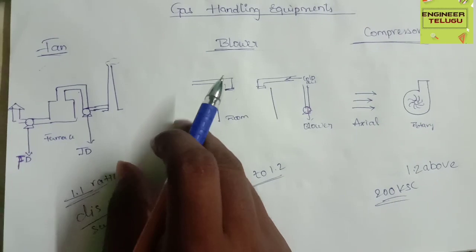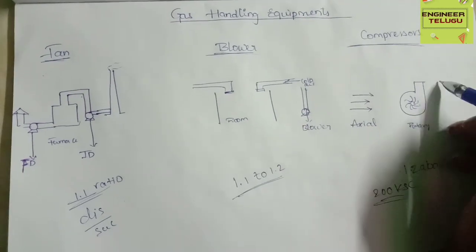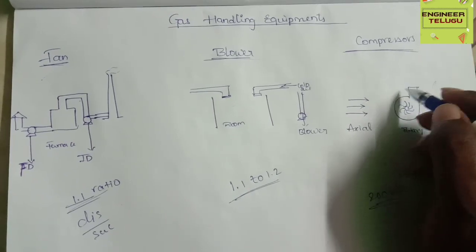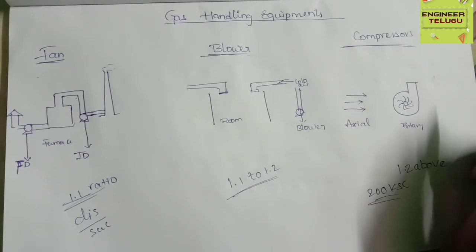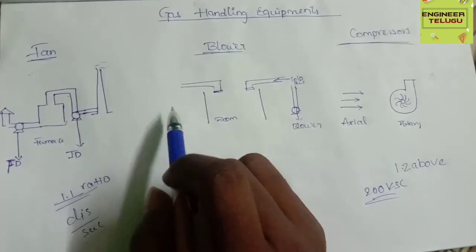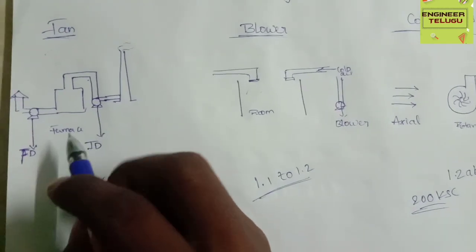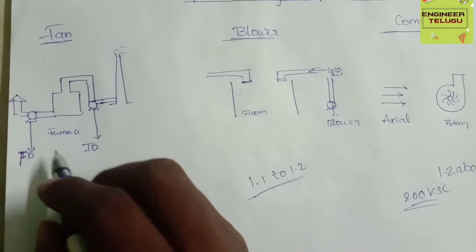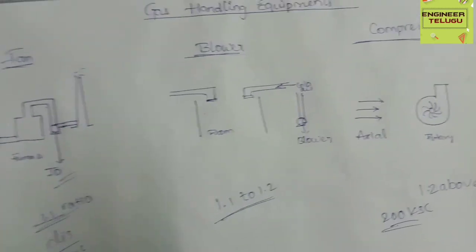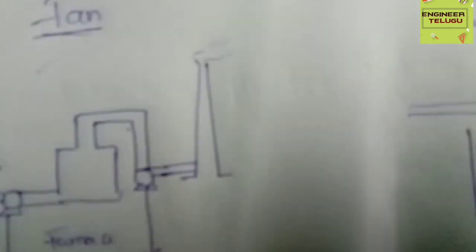We can use the industrial applications of the fan and blower. For a compressor, since pressure is high and volume is low, the gas will be compressed and it is easy to transport. A small example: fans are of two types — ID Fan and FD Fan, that is induced draft fan and forced draft fan.